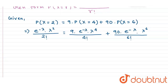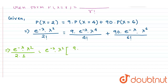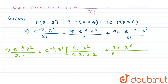If we further simplify this term, we get e^(−λ)·λ², with 2! written as 2×1. Taking e^(−λ)·λ² out, this becomes 9·λ²/(4×3×2×1) plus 90·λ⁴/(6×5×4×3×2×1).